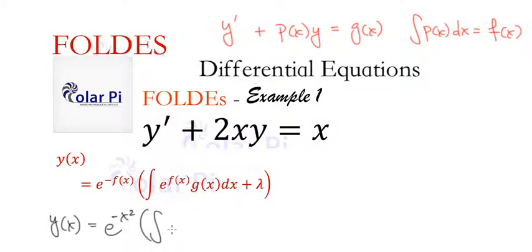We just said f of x is x squared so we have e to the x squared and then g of x clearly is that, so by comparison of the form, g of x is x so we have x and then dx and of course plus lambda.